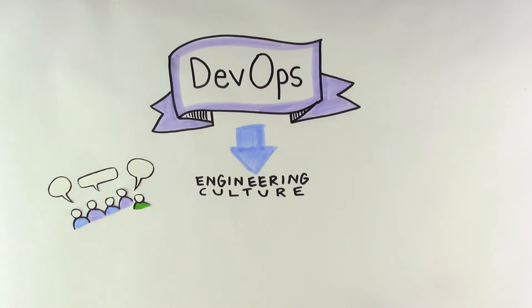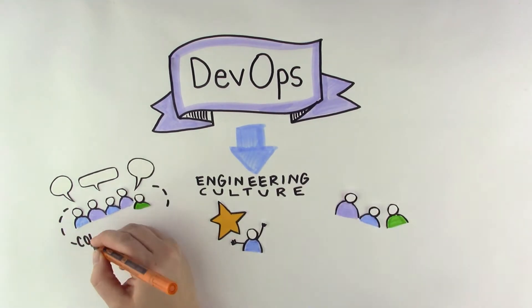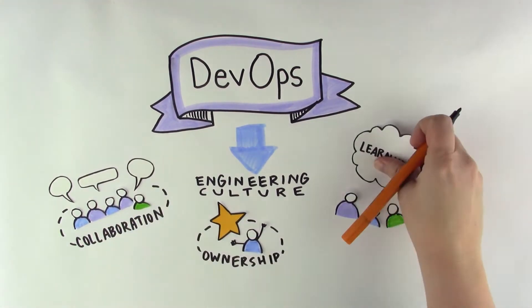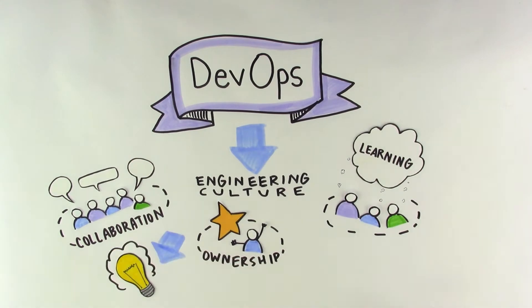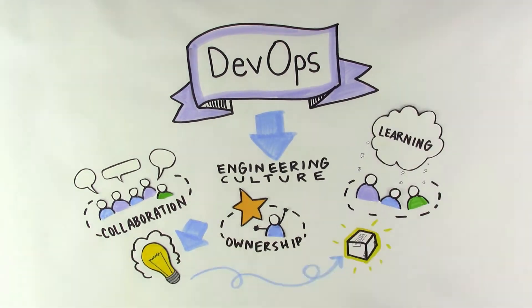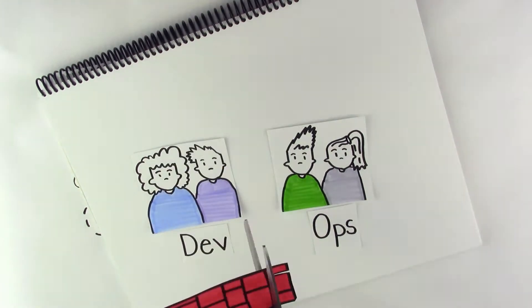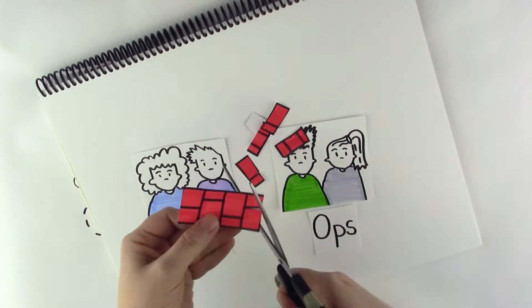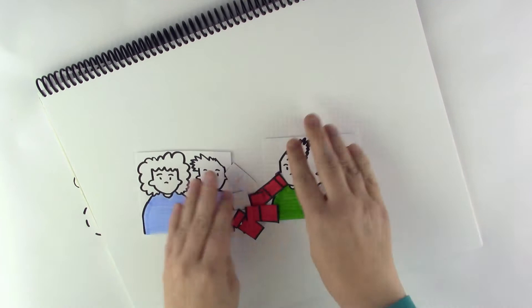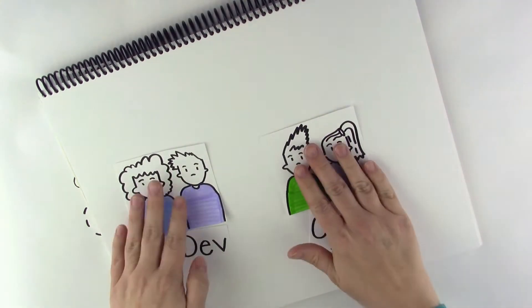ownership, and learning with the purpose of accelerating the software development lifecycle from ideation to production. DevOps was born out of the desire to eliminate or reduce the friction between developers and operations folks in traditional engineering organizations.